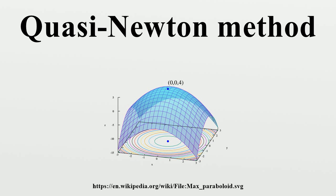In multiple dimensions the secant equation is underdetermined, and quasi-Newton methods differ in how they constrain the solution, typically by adding a simple low-rank update of the current estimate of the Hessian.